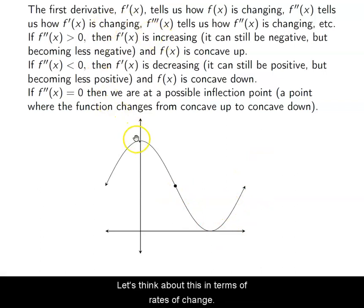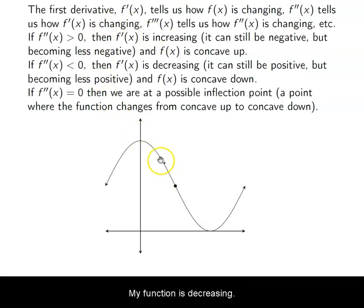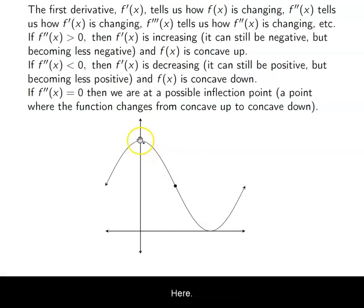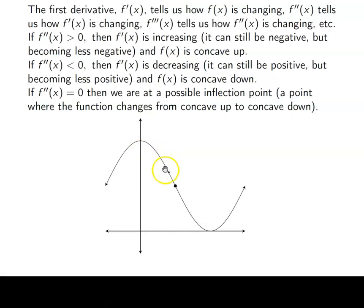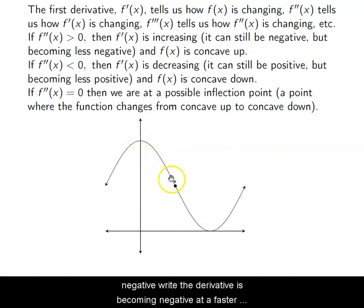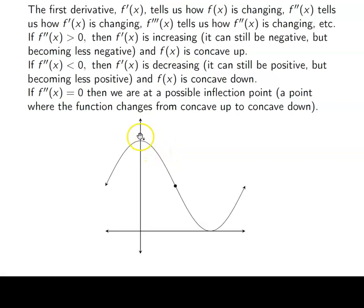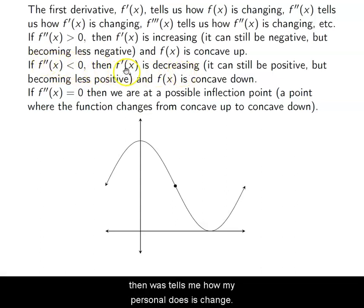Let's think about this in terms of rates of change. My function is decreasing here, which means my first derivative is negative. But look at how my function is changing — from this point to this point there's not a big difference in change, but over the same interval over here there's a drastic increase in change. That means my function is becoming more and more negative — the derivative is becoming negative at a faster and faster pace as I approach this value.